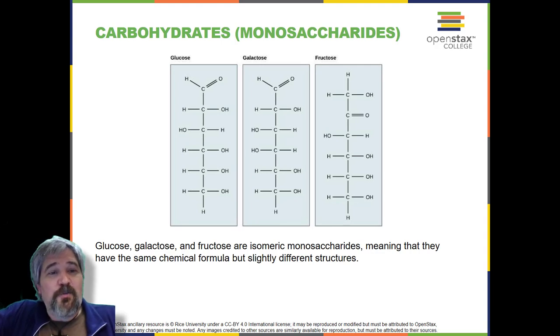Carbohydrates are classified into three subtypes: monosaccharides, disaccharides, and polysaccharides. Monosaccharides, mono for 1 and sacchar for sweet, are simple sugars, the most common of which is glucose.